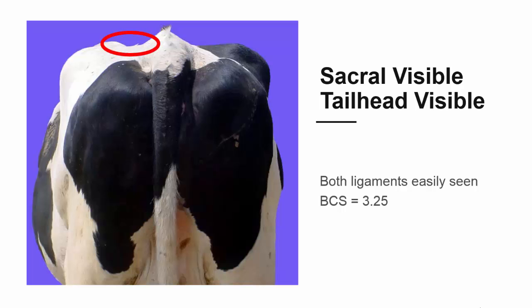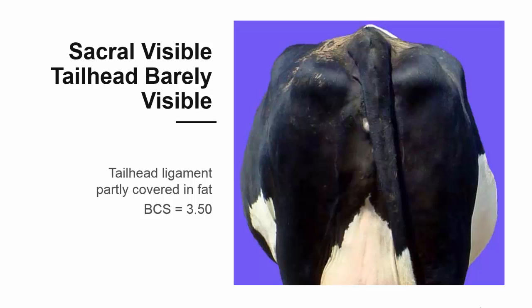If both the sacral and the tail head ligament are visible, the cow will score 3.25. If the sacral ligament is visible but the tail head ligament is partly covered in fat, the cow receives a score of 3.5.